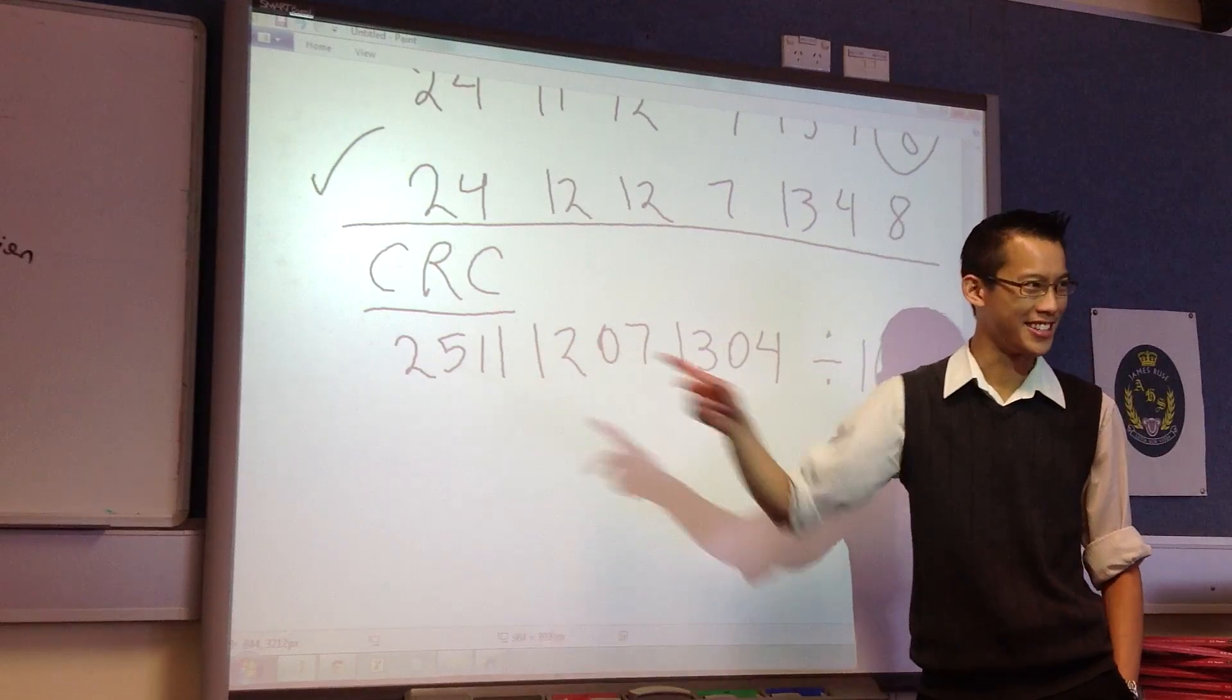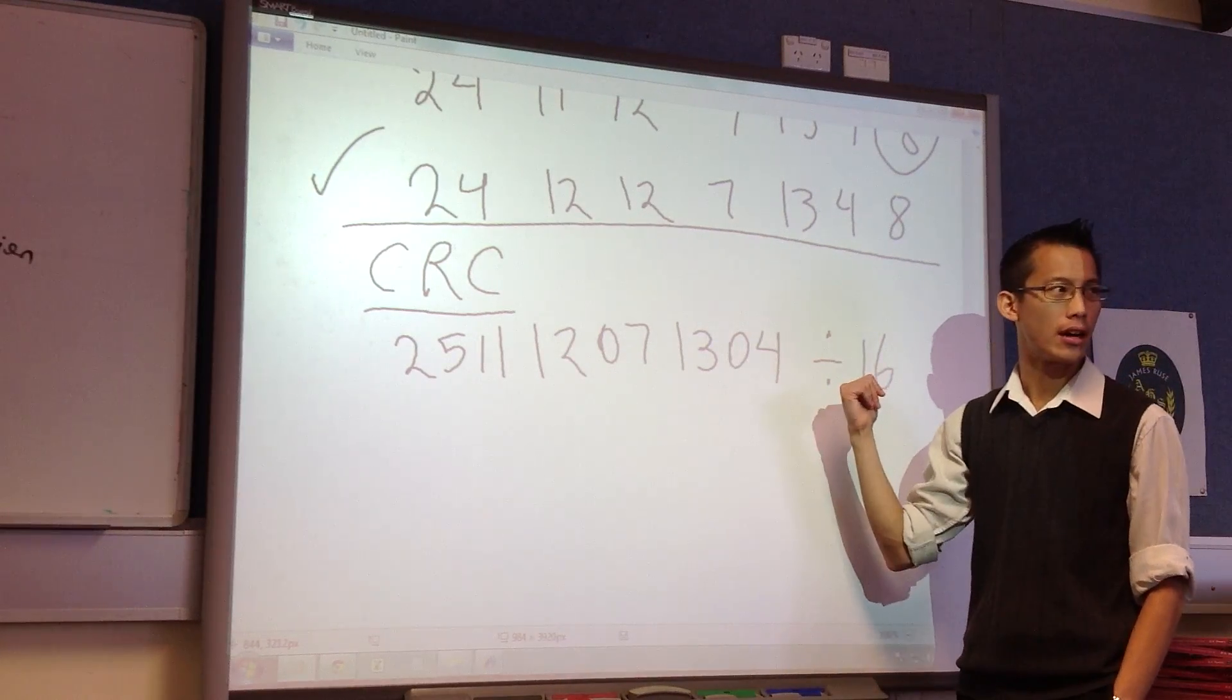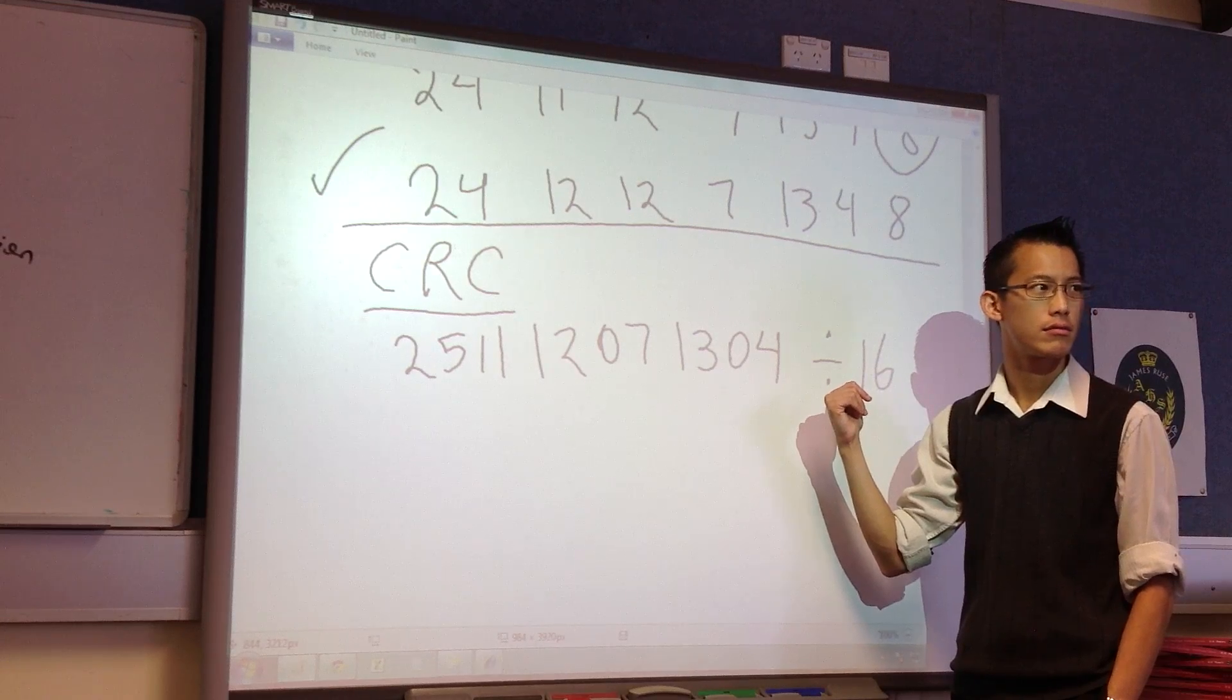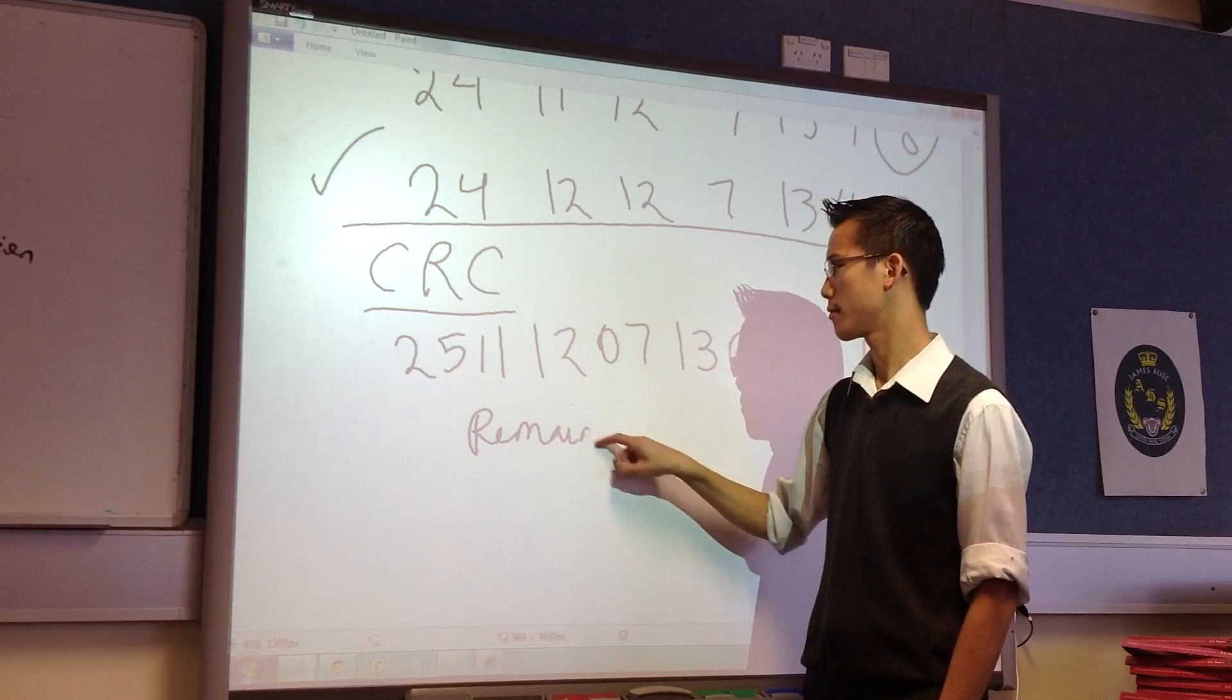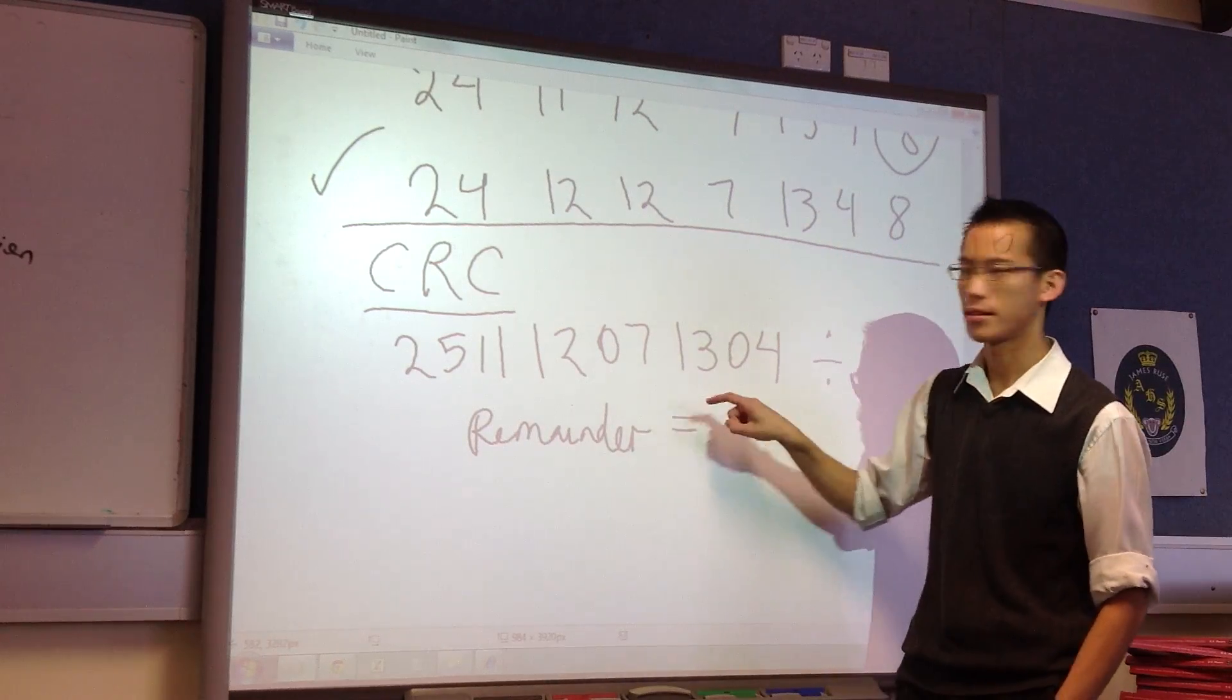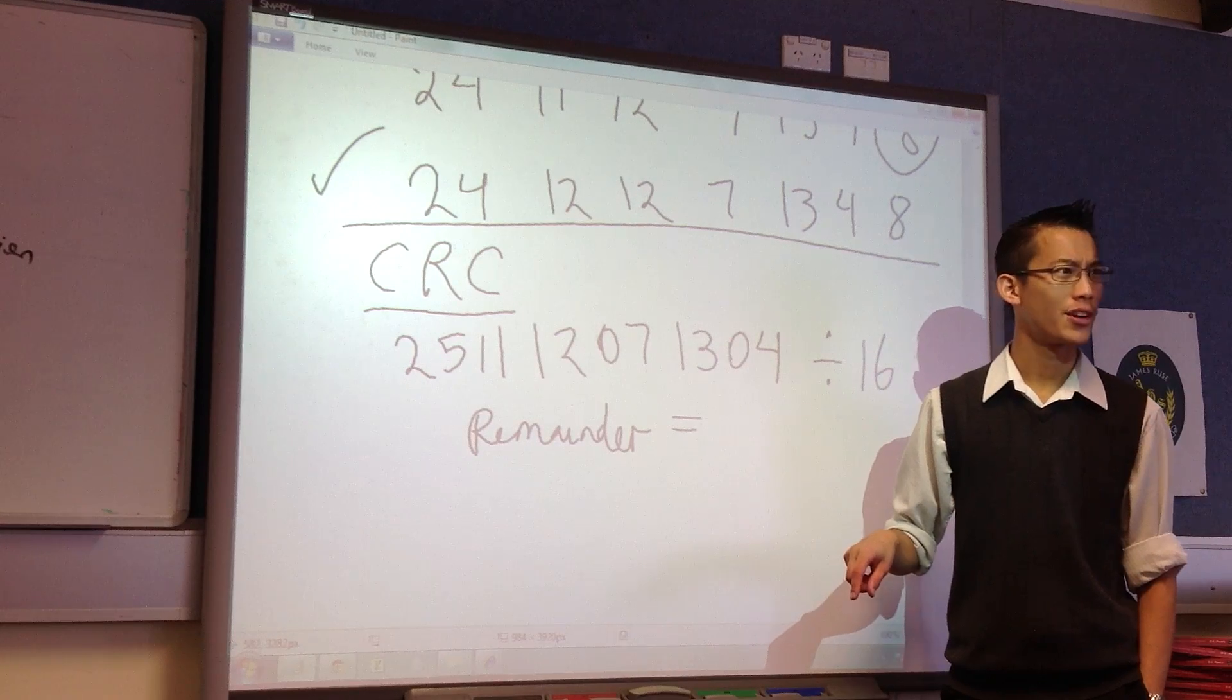Now, this is a very large number, but I think your calculator should be able to handle it. Can someone tell me, what's the remainder for this? After you divide by 16, what do you get? Anyone got it?